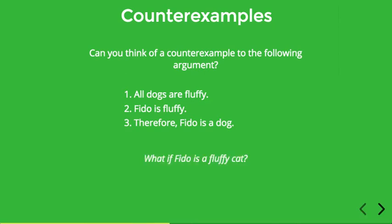Well, what if Fido is a fluffy cat? We could easily imagine a world in which all dogs are fluffy and something called Fido is fluffy, but that thing Fido is not a dog — Fido might simply be a cat. So while this is a really simple example, this little description of a state of affairs in which all dogs are fluffy and Fido is fluffy but Fido is a cat and therefore not a dog shows that the argument isn't valid, because the conclusion isn't necessarily true given all the premises.